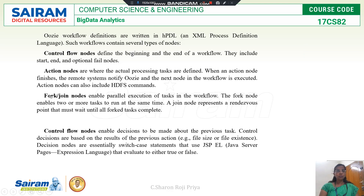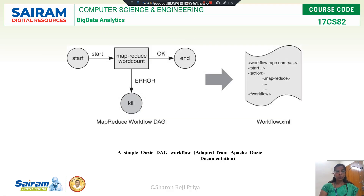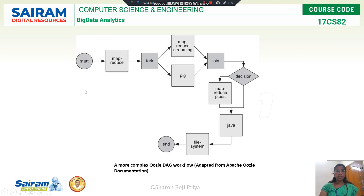Next are fork and join nodes. Fork is for performing parallel execution — two jobs can run in parallel. Join is a point that waits for all the fork nodes to complete. Once all the fork nodes are completed, they are joined and execution moves to the next step.